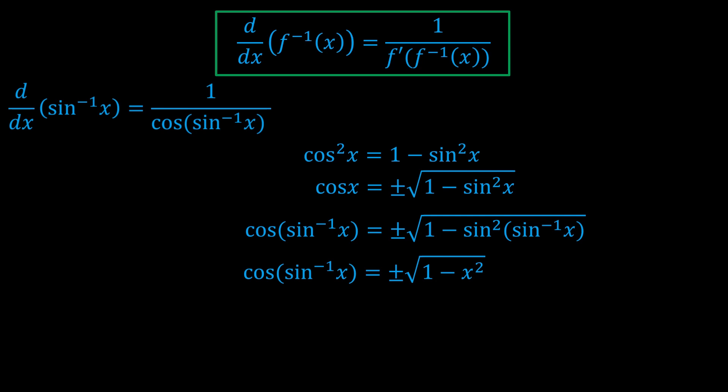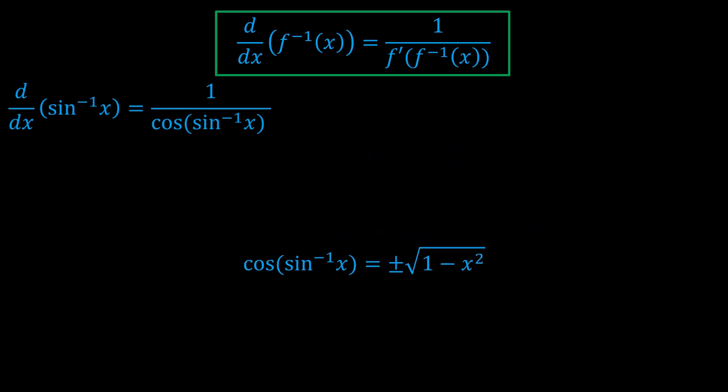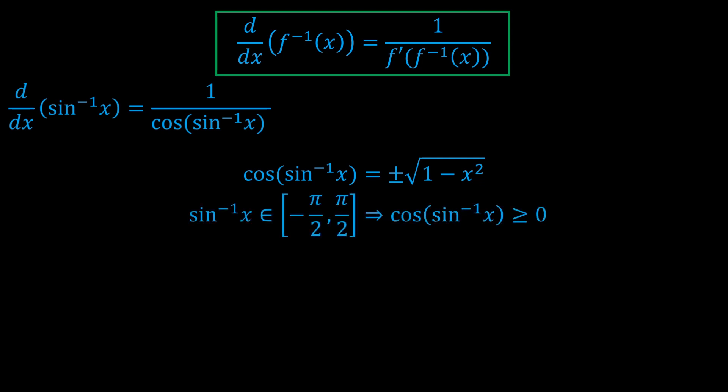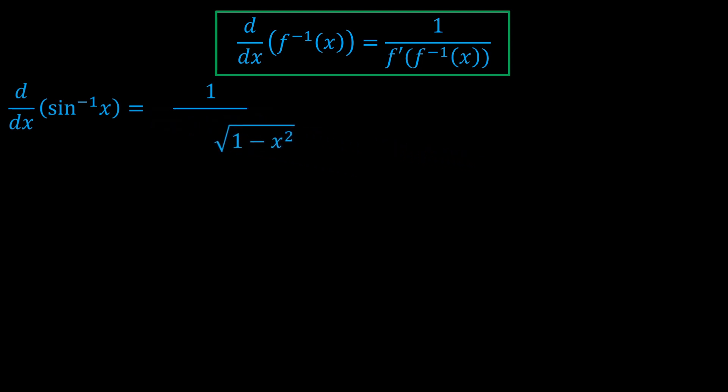But do we take plus or minus? How do we work this out? Well, the definition of the sin inverse means that it's between minus pi over 2 and pi over 2. And in that interval, cosine is positive. So cos of sin inverse has to be positive. That means we take plus, not the minus. And that means the derivative of sin inverse is 1 over the square root of 1 minus x squared.